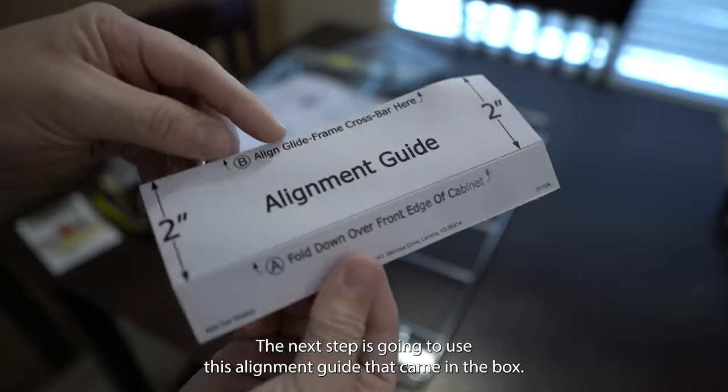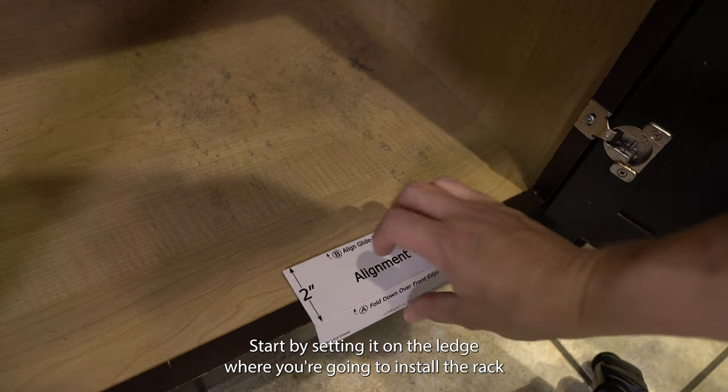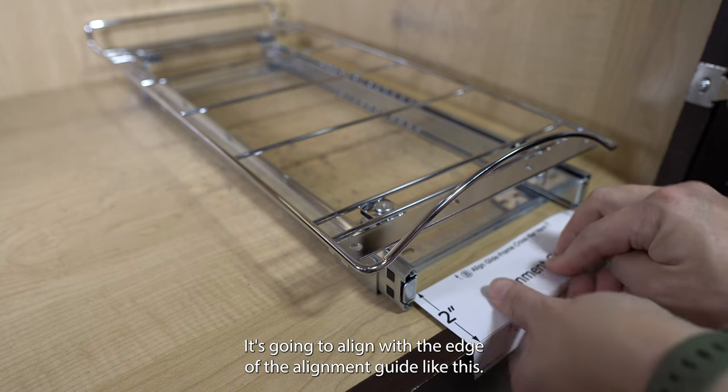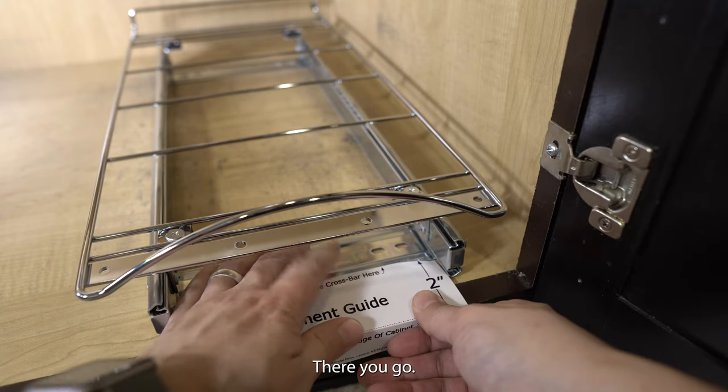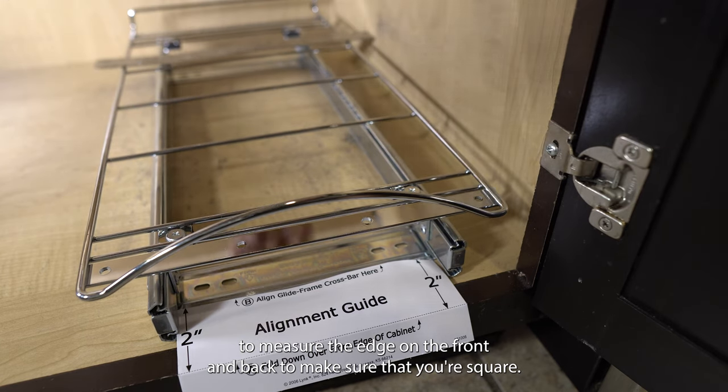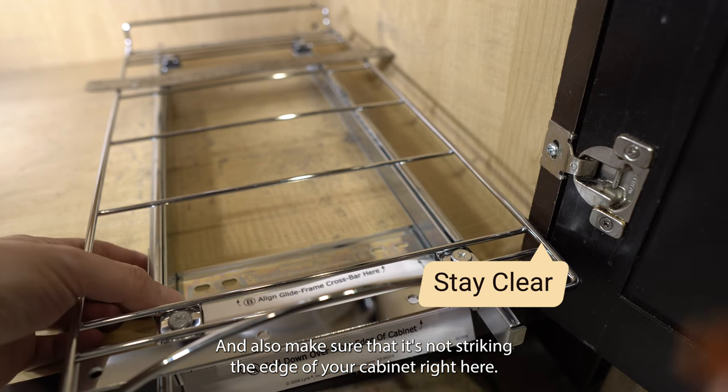The next step is going to use this alignment guide that came in the box. Start by setting it on the ledge where you're going to install the rack, and the front of the slider is going to align with the edge of the alignment guide. Use a ruler to measure the edge on the front and back to make sure that you're square, and also make sure that it's not striking the edge of your cabinet.